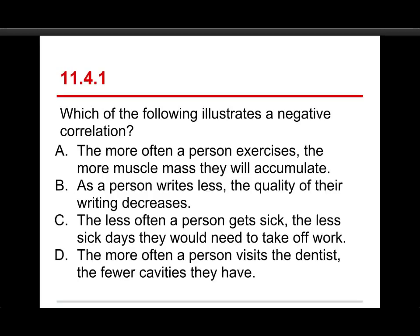The first question is, which of the following illustrates a negative correlation? A. The more often a person exercises, the more muscle mass they will accumulate. B. As a person writes less, the quality of their writing decreases. C. The less often a person gets sick, the less sick days they would need to take off work. Or D. The more often a person visits a dentist, the fewer cavities they have.